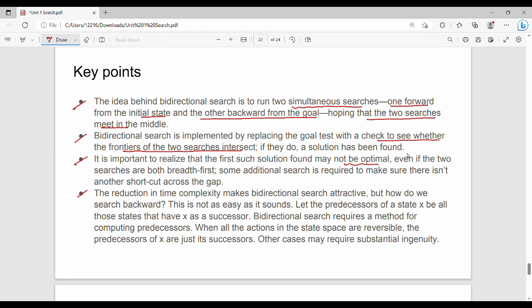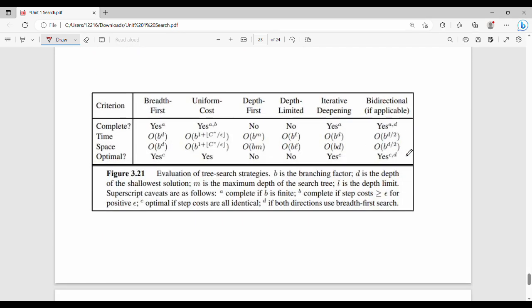Then last is comparison. So in the four points, if you have a point, you can explain what you have to do. So b is branching factor, d is depth. So b branching factor, d is depth, m is maximum depth, l is depth limit.